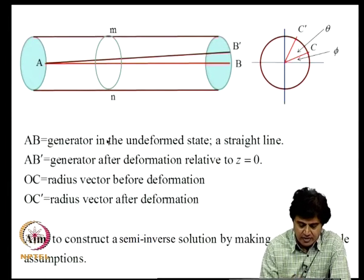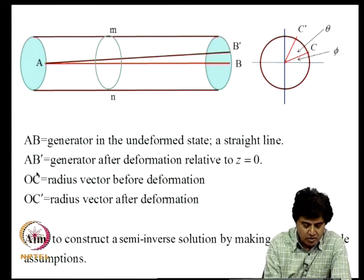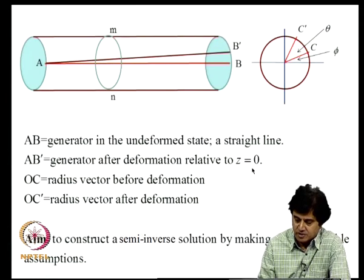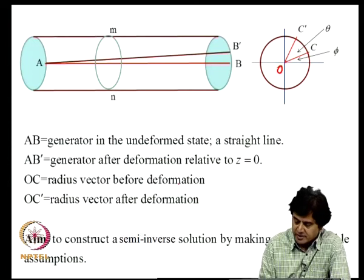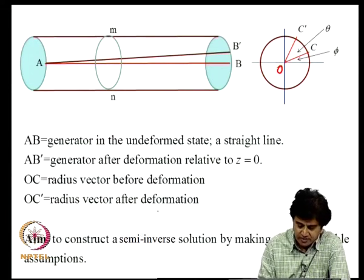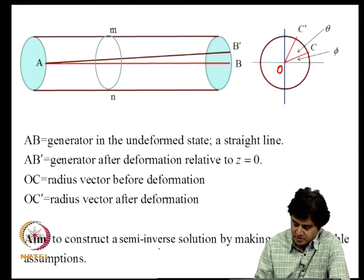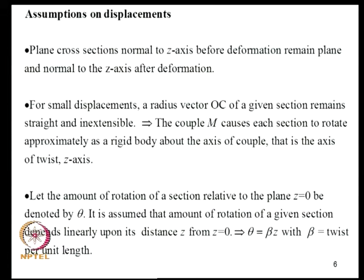AB is a generator in the undeformed state — a straight line. Due to twisting, point B moves to B-prime, and AB-prime is the generator after deformation relative to Z=0. On the side view, OC is a radius vector before deformation; after rotation, C moves to C-prime. The aim is to construct a semi-inverse solution by making suitable assumptions on the displacement field. We assume: elastic material behavior, homogeneous and isotropic material, and length large compared to depth and breadth.